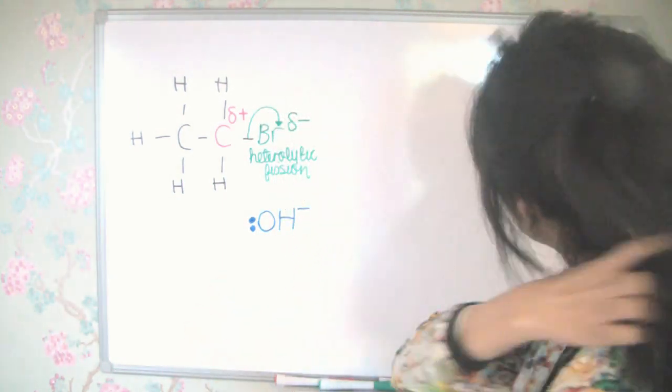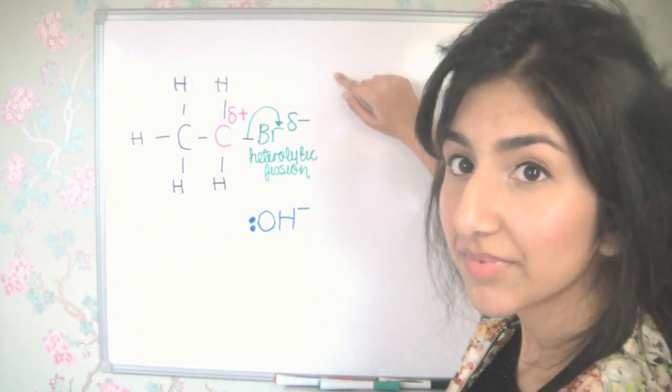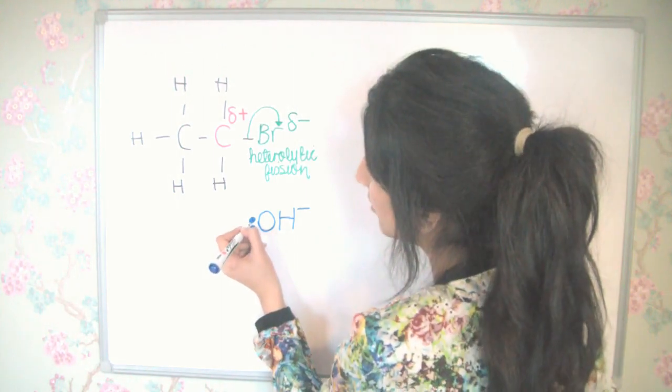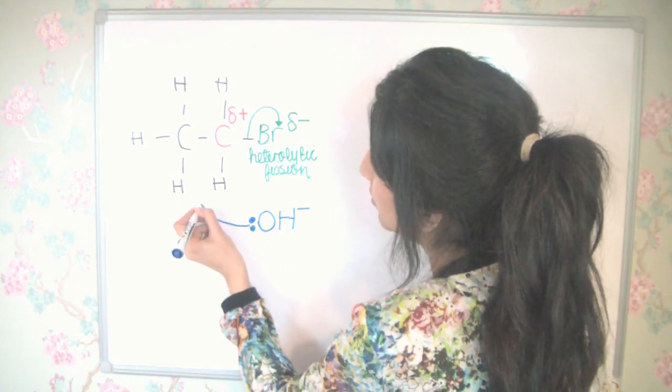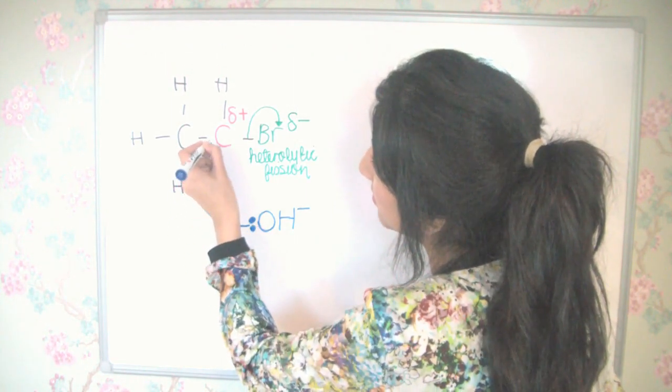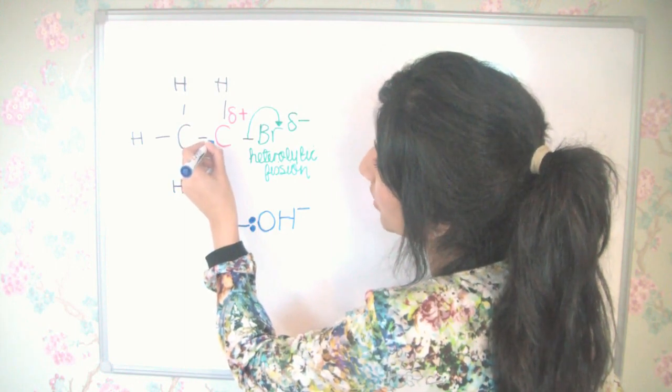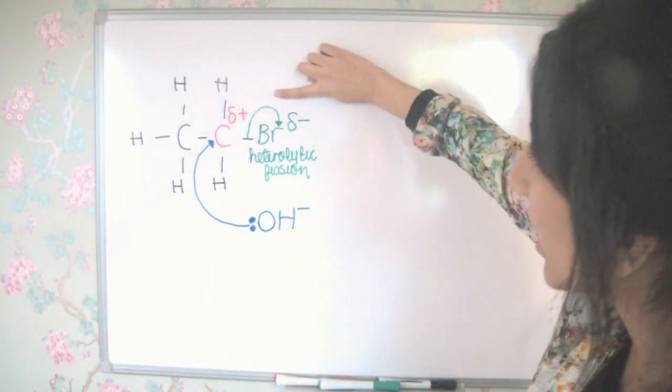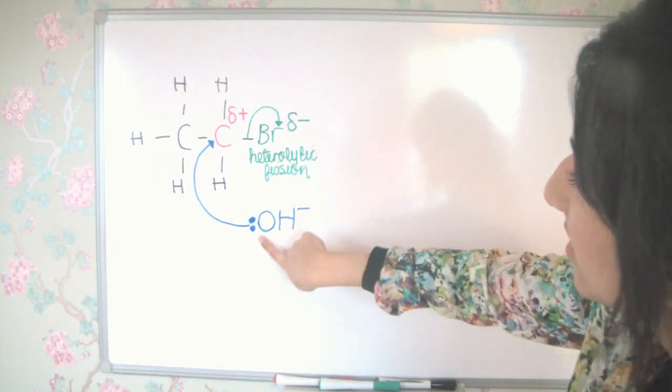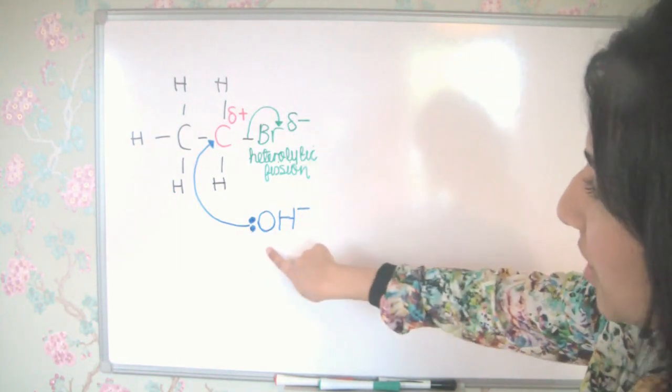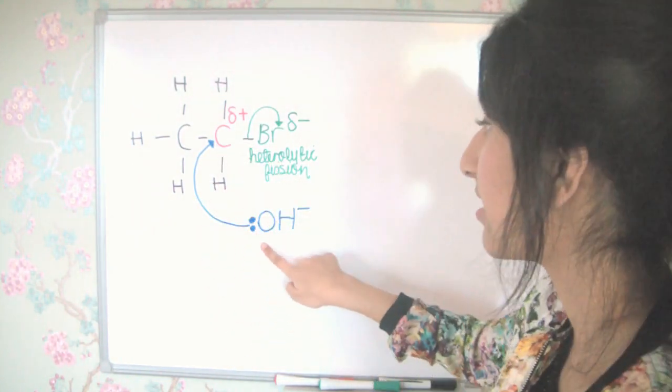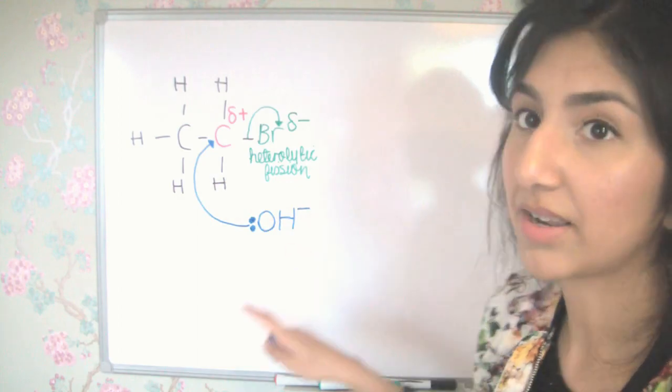So since the electrons have gone to bromine, the electrons here on the hydroxide ion will go to the partially positive carbon we have here. So here the electrons are going to bromine, and now here the electrons are going from the OH ion to the carbon. So that's what the arrows represent. It's the movement of these pairs of electrons.